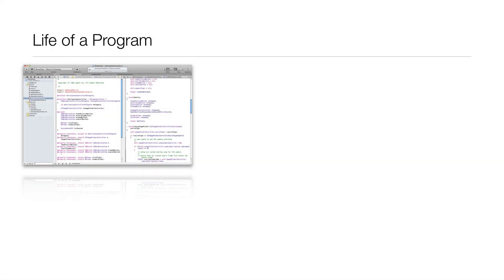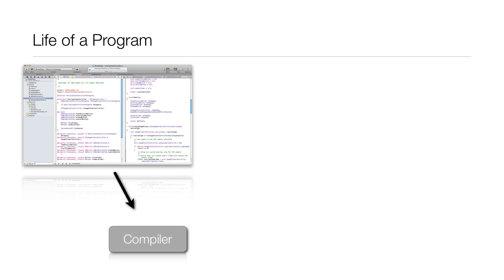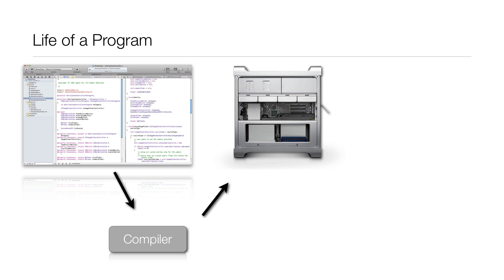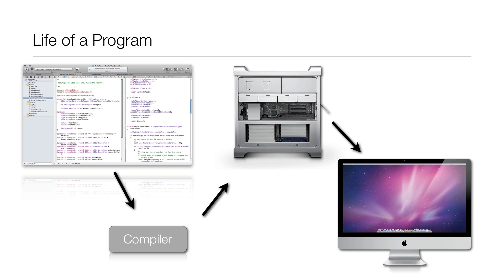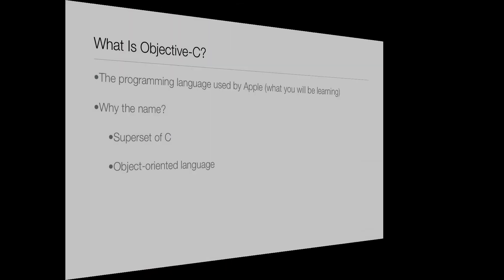Now let's quickly run through the life of a program. It starts off as code in the source code editor — you type in all the code for your program, then click Run. It goes to the compiler, gets compiled and built, and is stored on your hard drive — whether that's your computer or a mobile device. Then once you open that program, it's launched and you can see it running on screen and interact with it.